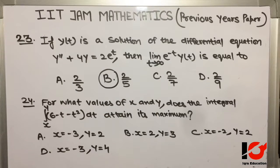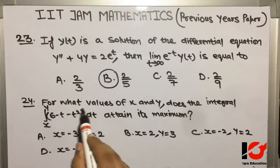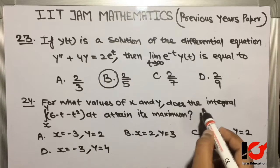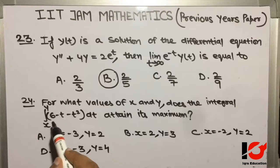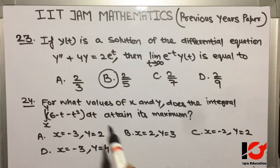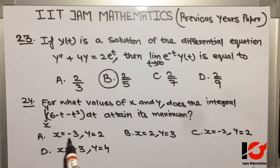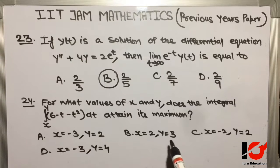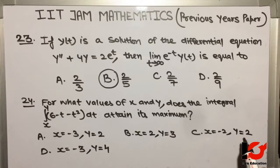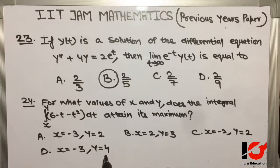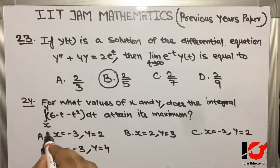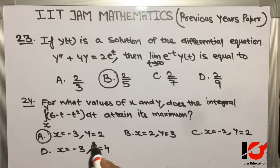Question 24: For what values of x and y does the integral from x to y of (6 - t - t²) dt attain its maximum? Option A: x = -3, y = 2. Option B: x = 2, y = 3. Option C: x = -2, y = 2. Option D: x = -3, y = 4. The required answer is Option A — x = -3 and y = 2.